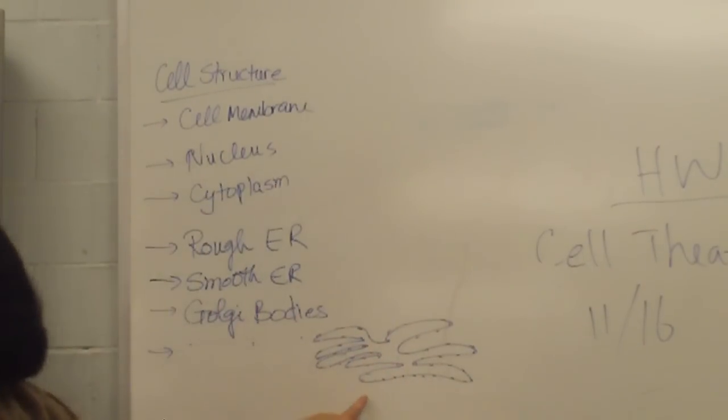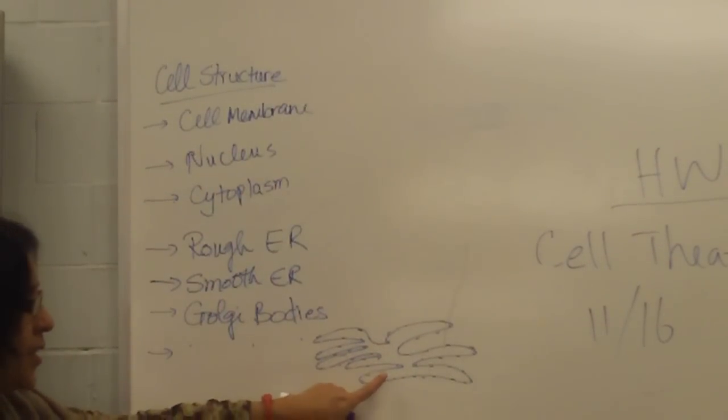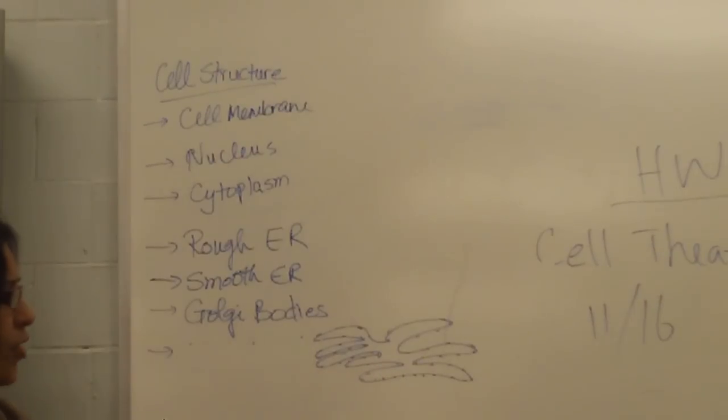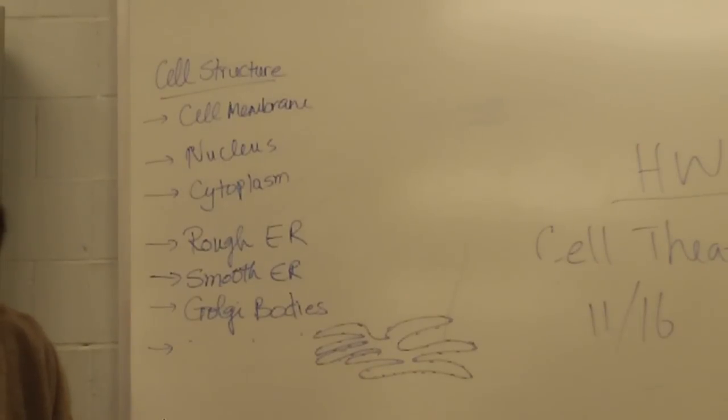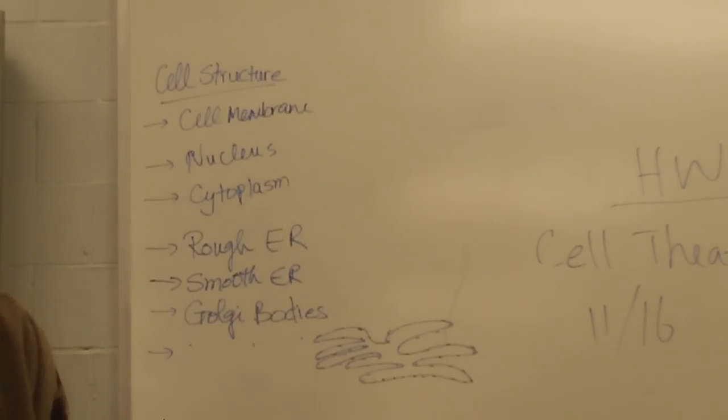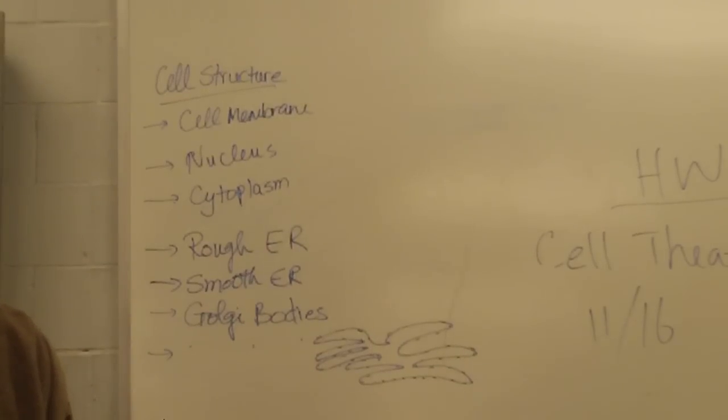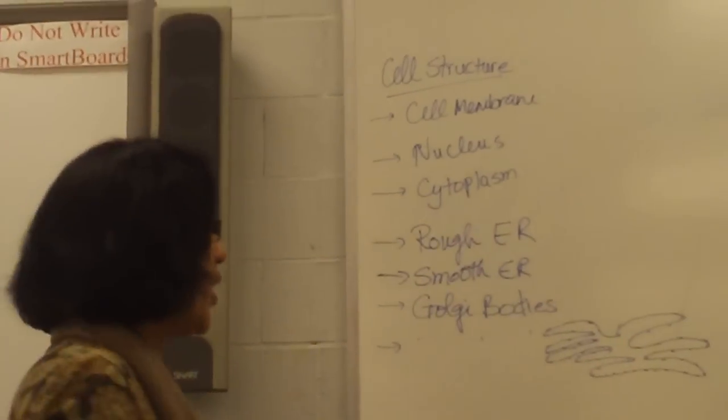So what happens is the proteins are synthesized on the ribosomes, which are present on the endoplasmic reticulum. What are the two major functions of rough endoplasmic reticulum? One is protein synthesis, which is the second one? Layton? I think it helps contribute to making the components of the cell membrane. Yes, phospholipids. Production of phospholipids.